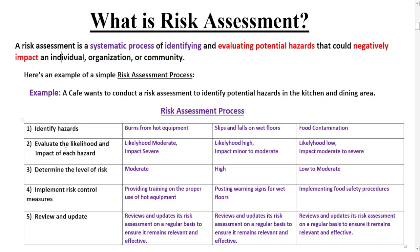After identifying hazards, the next step is to evaluate the likelihood and impact of each hazard. This involves determining how likely the hazard is to occur and its potential impact — such as the number of people affected and the severity of injury or damage. In our example: the likelihood of burns from hot equipment is moderate and the impact could be severe; slips and falls on wet floors have a high likelihood with minor to moderate impact; and food contamination has a low likelihood but moderate to severe impact.